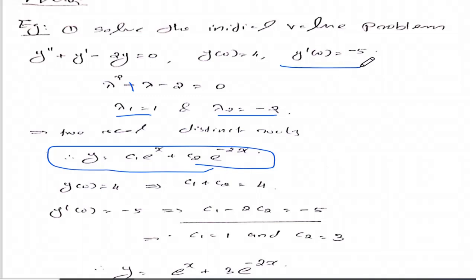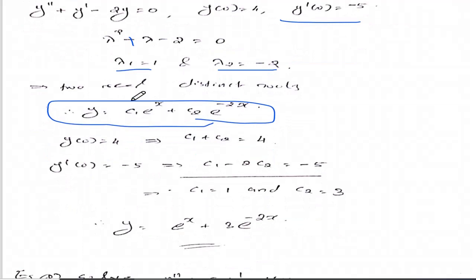Taking the derivative, y dash equals c1 e raised to x minus 2 c2 e raised to minus 2x. At x equals 0, this gives c1 minus 2c2 equal to minus 5. These are two equations in two unknowns: c1 plus c2 equal to 4 and c1 minus 2c2 equal to minus 5.